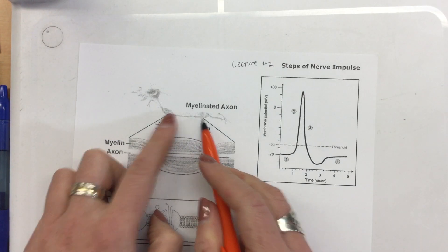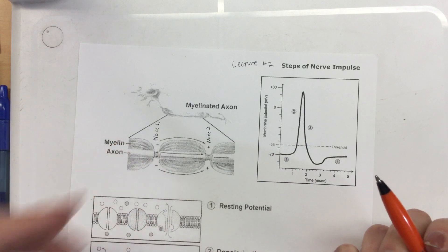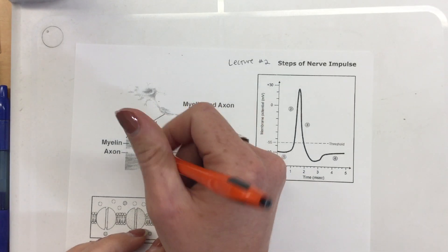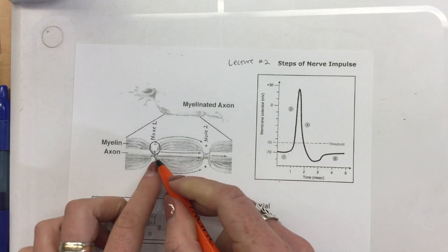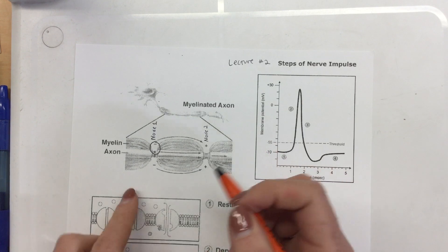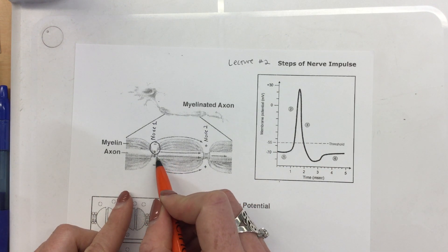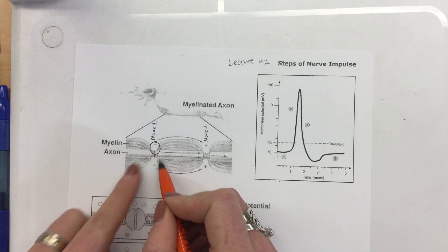So far we've zoomed in on the axon and the Schwann cells, and now we're going to zoom in even more. Like you guys saw, we had those cations moving in and out of the axon. So we're going to zoom in on the cell membrane of an axon, right here on node one. I'm going to make a circle — I want to include one of those plus signs and one of those minus signs. So we're going to be looking at this cell membrane right here, zoomed in.